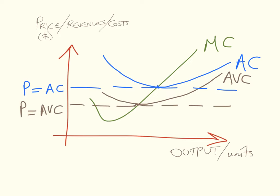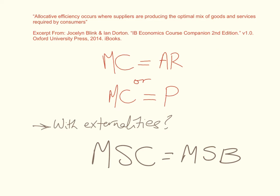To recap: the shutdown price is where P equals AVC, and the break-even price is where P equals AC in the long run. Two other very important concepts when it comes to talking about market structures are the concepts of allocative efficiency and productive efficiency.